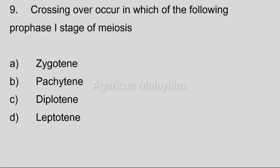Ninth question: Crossing over occurs in which of the following prophase stages of meiosis? Option A: zygotene; option B: pachytene; option C: diplotene; option D: leptotene. Correct answer: option B, pachytene.